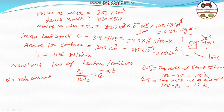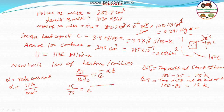Alpha is the rate constant, which depends on the overall heat transfer coefficient U, the heating area A, the mass of milk m, and the heat capacity c. So α = UA/(mc). Substituting: ΔT/ΔT₀ = 15/75 = 1/5, equal to e^(−αt), with U = 1136, A = 0.0245, m = 0.291, and c = 3.9 × 10³.